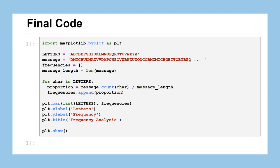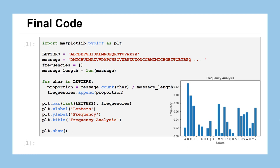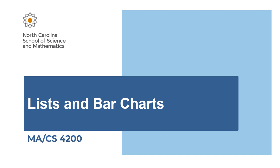Putting everything together from top to bottom: first, import matplotlib.pyplot as plt — import statements always come at the top. Define letters and message, set frequencies as an empty list, compute message_length. Run through the letters one character at a time and for each character, calculate the proportion and append it to frequencies. Then specify all the things we want for our bar chart: plt.bar with a list of labels and a list of values, specify an x label, y label, and title, then show the plot. This is going to be a really nice way for us to do our frequency analysis and get bar charts up and running. Make sure you've got a good copy of this code and understand how each piece of it works. At this point, we now know how to construct lists, edit their values, and use matplotlib to turn those values into a bar chart.